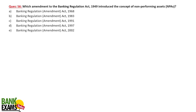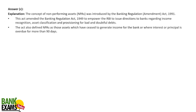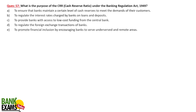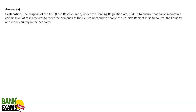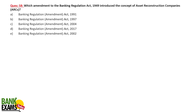The concept of NPA (Non-Performing Asset) was introduced in 1991. If loan instalments are not being paid beyond 90 days, the loan becomes a non-performing asset. Regarding the purpose of CRR (Cash Reserve Ratio) under the Banking Regulation Act — its purpose is to ensure that banks maintain a certain level of cash reserves to meet the demands of customers.